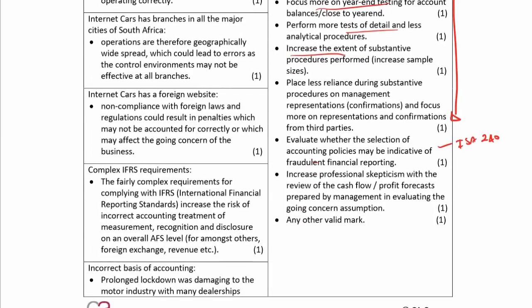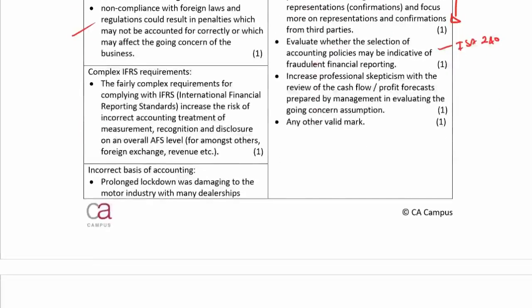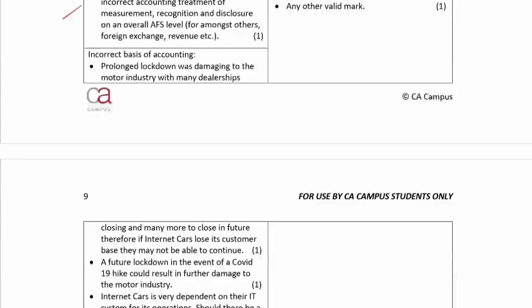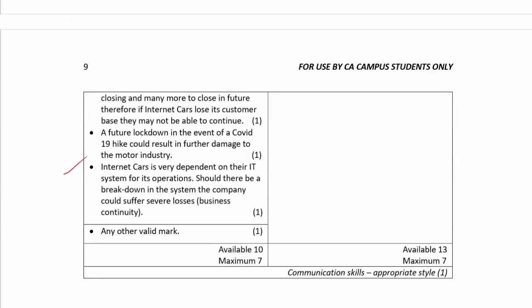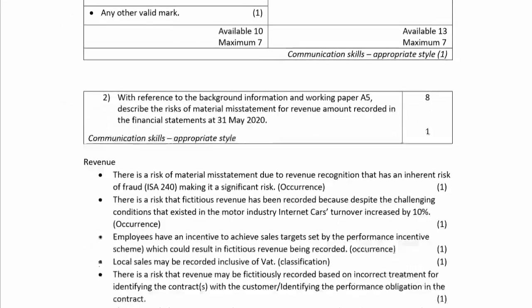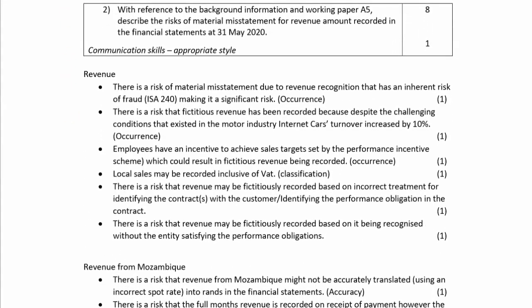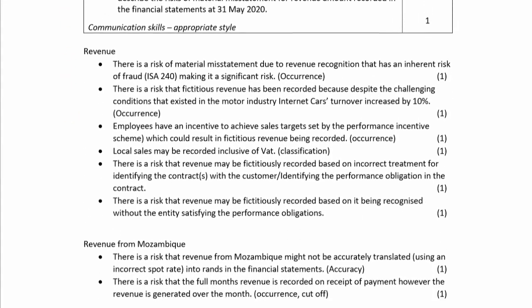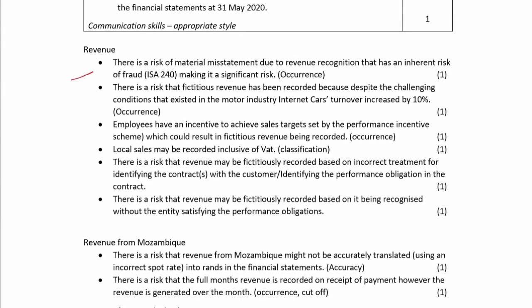Decentralized foreign operations, complex IFRS requirements, and then your going concern indicators. Moving on to risks with regards to revenue - there was some standard revenue risk from ISA 240.